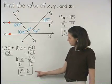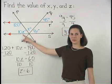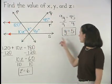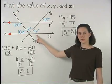And since we know that z equals 6, then 10z must equal 60. And since we know that y equals 5, then 9y must equal 45.